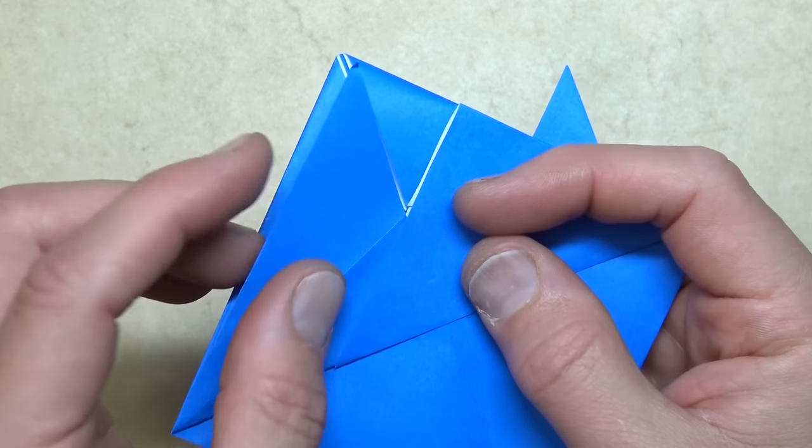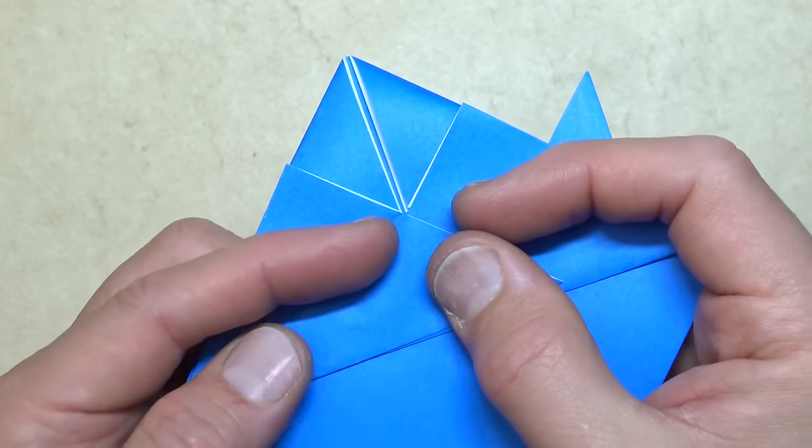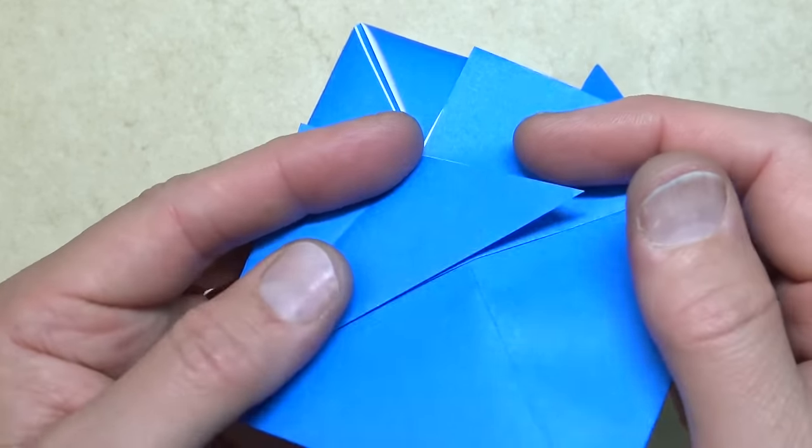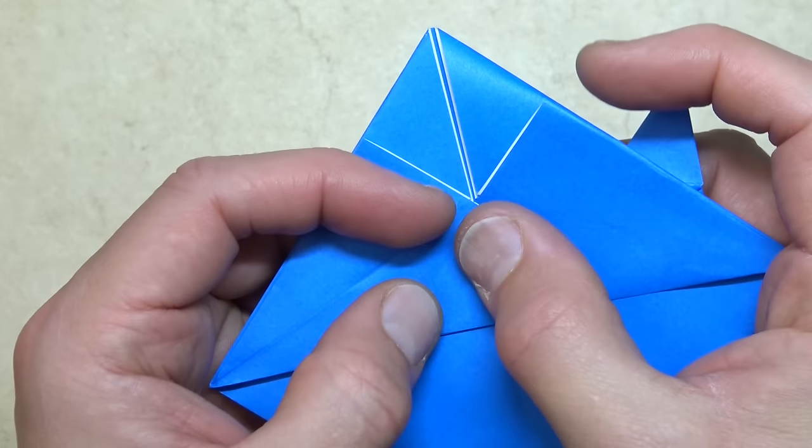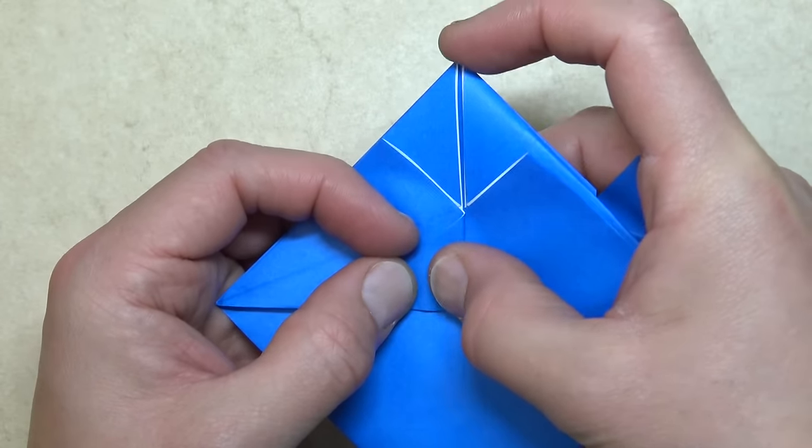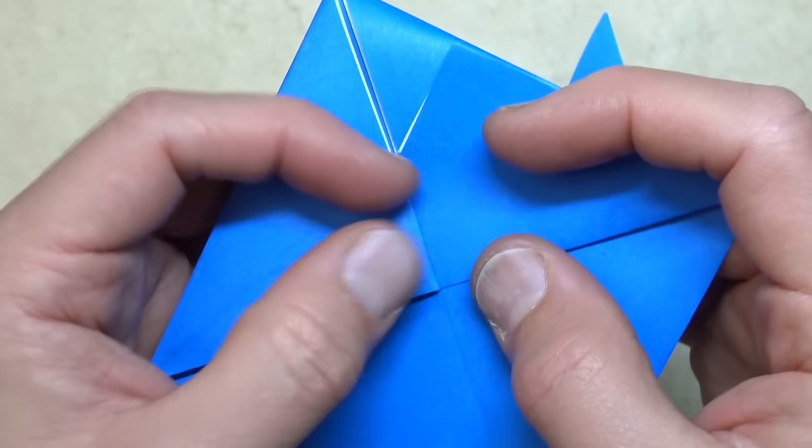And now fold this flap down. Just the single flap. This is going to be the mouth. And these are the two eyes. Fold this flap over. On the center line. Make sure it aligns perfectly with the center. That's important.